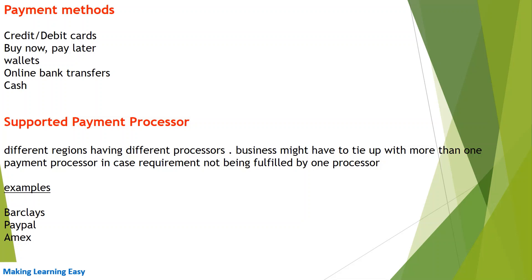If a business offers all three card payment options to customers, it will have to tie up with both payment processors, and those processors are configured at the payment gateway end. If the payment gateway gets a request for a Visa credit card, it will forward the request to the Visa payment processor. Some examples of payment processors are Worldpay, PayPal, and NMI — Worldpay is used in the UK and US. The payment gateway has two kinds of integration: one with the merchant (the upstream system) and one with the payment processor (the downstream system).